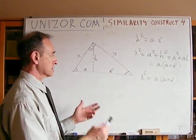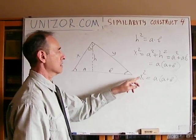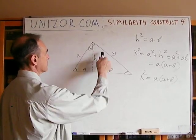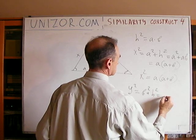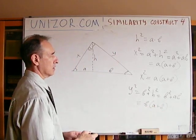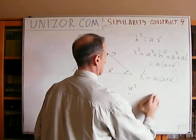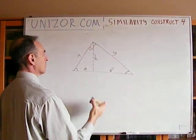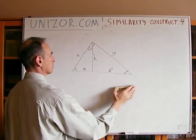We know from a previous lecture how to construct a segment whose square equals the product of two given segments. So we reduce this to a known construction problem. Similarly, Y² equals B² plus H² equals B² plus AB, which equals B(A plus B) — again the same kind of known construction. The key theorem is that the square of the altitude to the hypotenuse equals the product of the two segments of the hypotenuse.